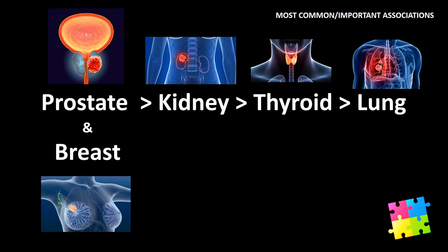Item 78: Metastases to bone — prostate and breast most often, then kidney, then thyroid, then lung.